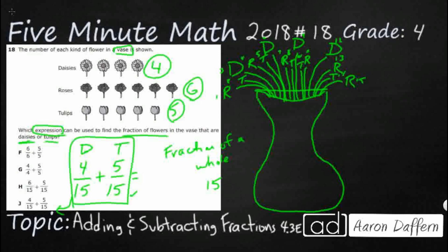And then when you add or subtract, you add across the top. So four plus five, that makes nine. But you don't touch the denominator. 15 plus 15 does not make 30. We're still dealing with 15ths because that's how many total flowers we have in this vase.